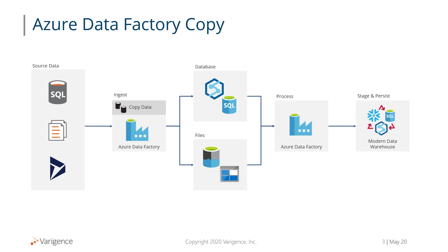So what we're going to do is just extract the data using the copy command, get the source query, take the data, and land it into either a landing table or a file system. For Azure Synapse, what we currently have developed is we're going to land the data using the copy command directly into a Synapse database. For any SQL Server compatible source like Azure SQL Database, SQL VM, or a managed instance, we're going to land the data into a SQL database.